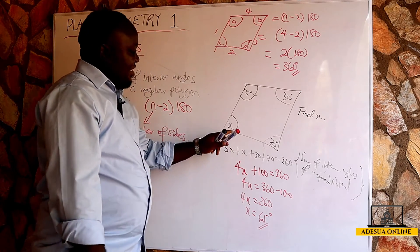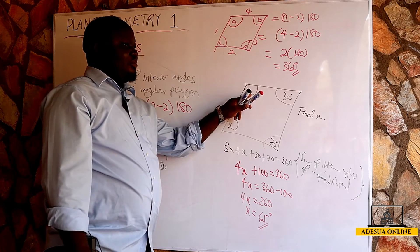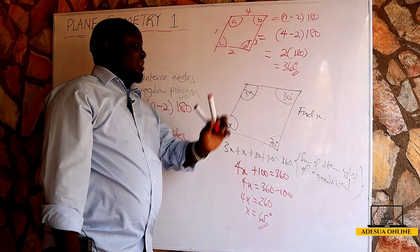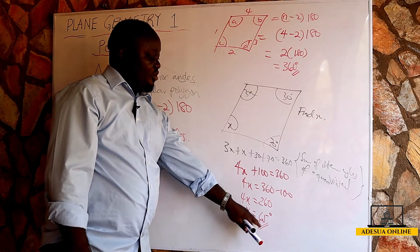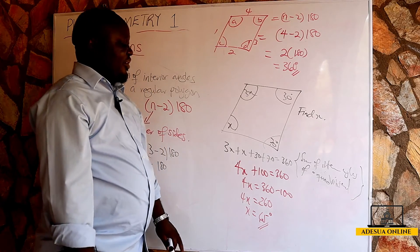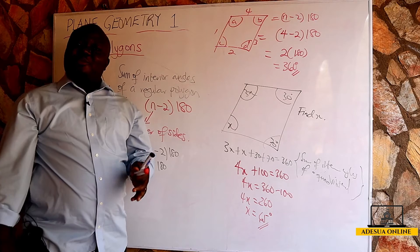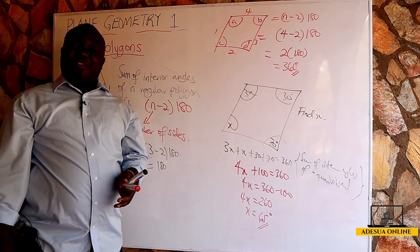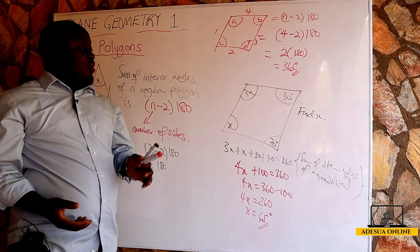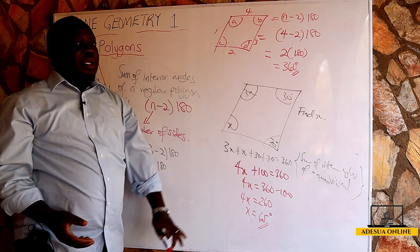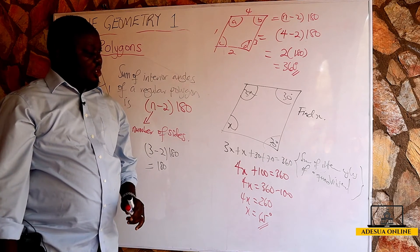4x equals 260, so x equals 260 over 4, which is 65 degrees. If x is 65, this angle is 65 and this angle is 3 times 65. Our value of x is 65. There are various types of polygons — the hexagon, nonagon, decagon, and so on. You use the same principle in solving most of them, so I'll leave you some more questions to solve.